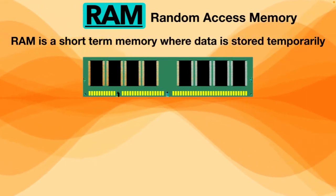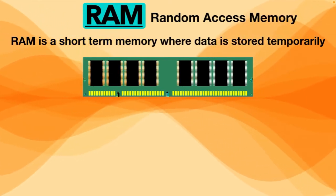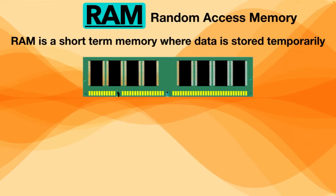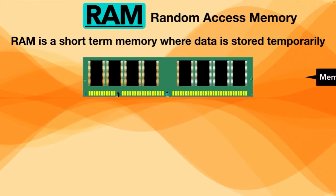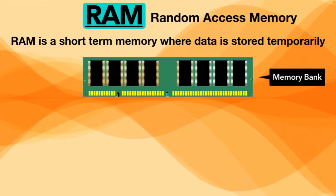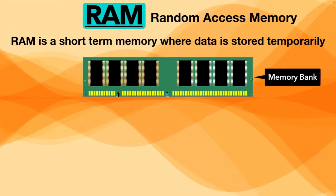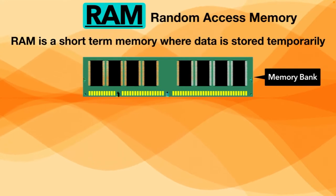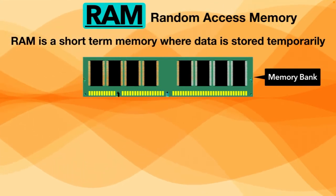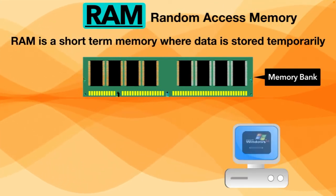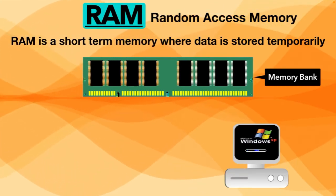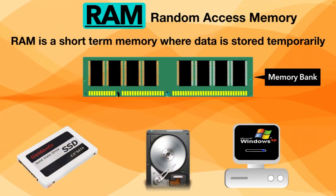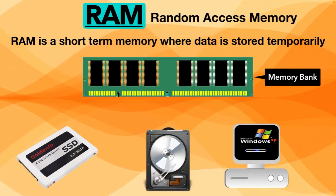To put it simply, RAM is a temporary memory bank where your computer stores data it needs to retrieve quickly. For example, when the computer is rebooted, the operating system and other files are reloaded into the RAM, usually from the HDD or SSD.